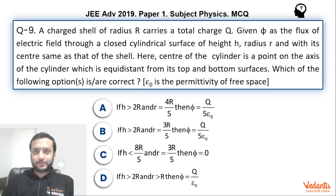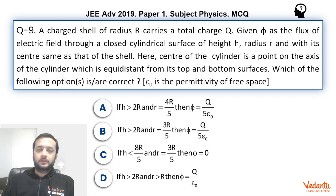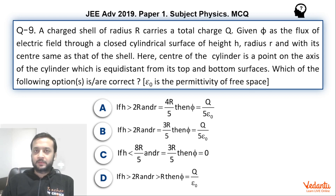Hi dear students. Let's see this question that came in JEE Advanced, Paper 1, Physics, in the year 2019. The question was based on Gauss's law and application of solid angle, but this question had some amount of ambiguity in one of the options. Let's see what I'm talking about and let's see why IIT should have given a different answer, in my opinion of course.